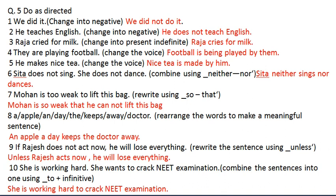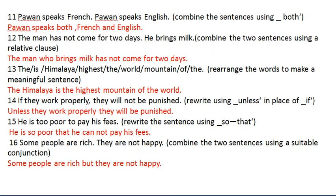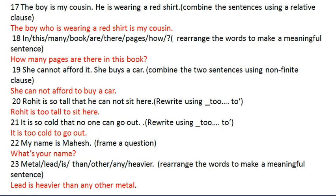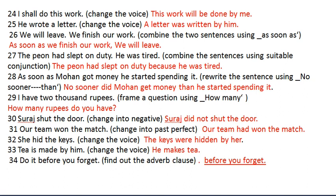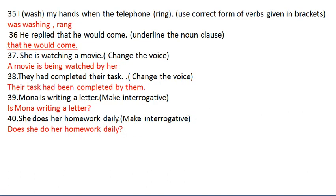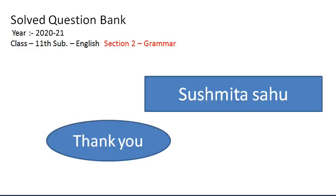Now, do as directed. In this section, you had to do whatever was given in the bracket. Like: 'we did it' — change into negative — 'we did not do it.' So all the answers that are in red, those are your answers. Go through them. If you have any problem, put it in the comments in the description box. They have given forty-five fill in the blanks or forty 'do as directed' in the grammar section, and they claim the exam will come from these. So better do it — it will be a good revision. Thank you very much, and keep watching my channel, because Section 3 and Section 4 will also be available after this. Thank you, bye, take care, all the best.